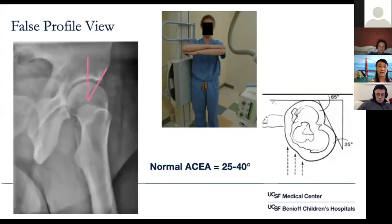You can also look on the false profile view for more esoteric conditions. For example, ischiofemoral impingement, where the femur and ischium are too close together, can often be recognized on this view with decreased space.